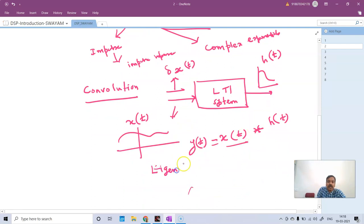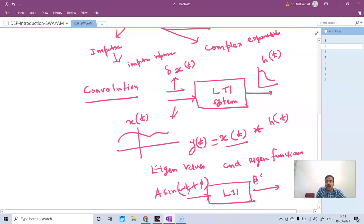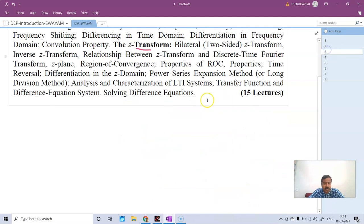What is the use of this? For any LTI system, if I give a complex exponential signal, sine of omega t plus some phase, why do I always get the same frequency output? Why is the frequency not changing? Why is there only a phase change? You will be raising questions like this and learning these concepts.